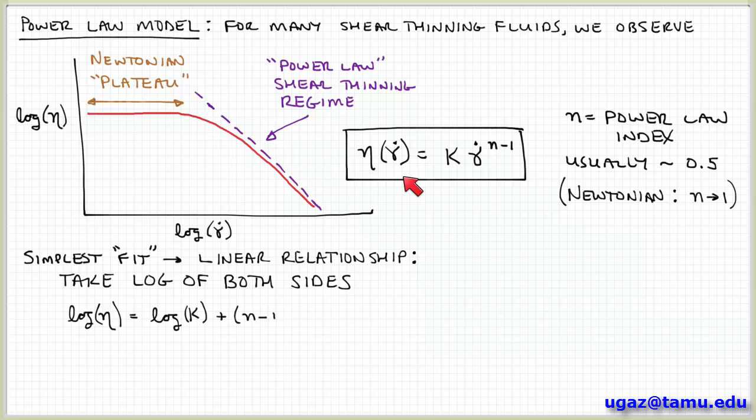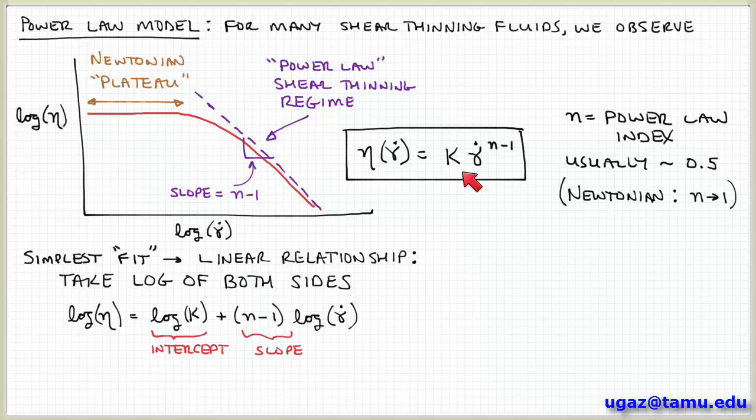So if we take the log of both sides of this equation, on the left-hand side I have log viscosity coefficient. And then I have on the right-hand side a product. So if you remember your rules for taking logs, log of the product AB is equal to log A plus log B. So the product of K times gamma dot becomes a sum. So the log of K plus, and then exponents become products. So gamma dot to the n minus 1, if I take the log of that, I get n minus 1 times log gamma dot.